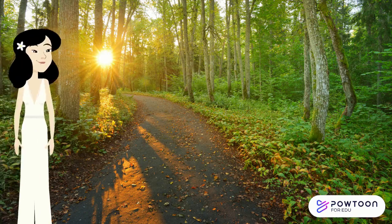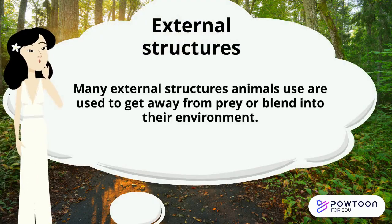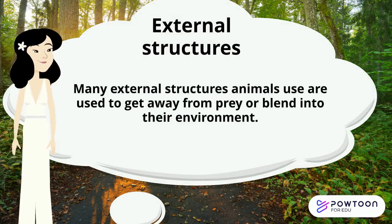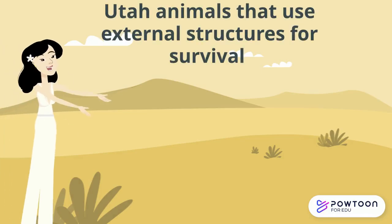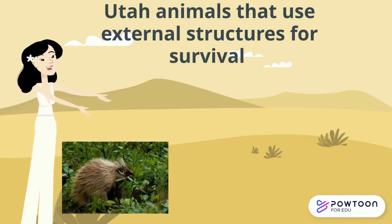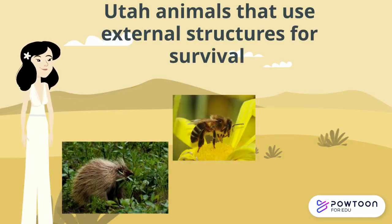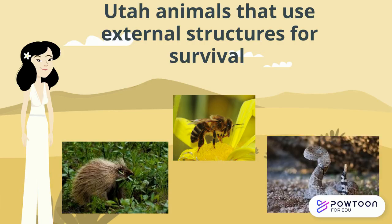How do external structures help animals survive? Many external structures animals use are used to get away from predators or to blend into their environment. Here in Utah, we have many porcupines. These animals use their sharp quills to poke their predators if they come under attack. Bees will sting things if they fear something will harm them, and snakes can use their rattle to scare things away.